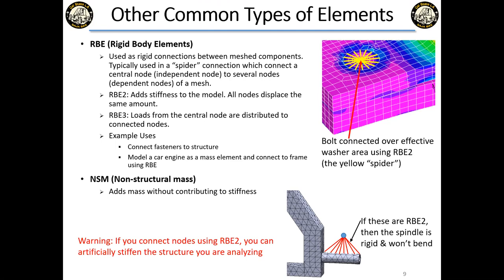The way I remember the difference: RBE2 is 'too stiff.' I usually use RBE3, but RBE2 has its place — for example representing a washer, where you're assuming it's rigid relative to the surrounding material. In that case, making it an RBE2 is appropriate because you're not trying to determine the washer's deflections.